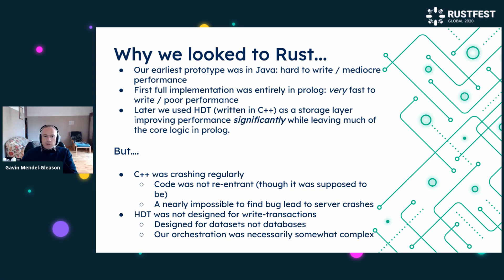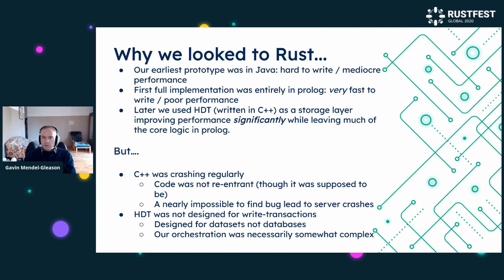Later we moved to a library in C++ called HDT and used that as our storage layer, which radically improved the performance of the application. However, we had a lot of trouble with it — it was a persistent source of pain. C++ was crashing regularly, partly because we needed multi-threading for performance reasons, since we were dealing with very large graph databases in the billions of nodes. The code was not re-entrant, although it was supposed to be, and that would come up when the server crashed, and it was really hard to find the source of these crashes.